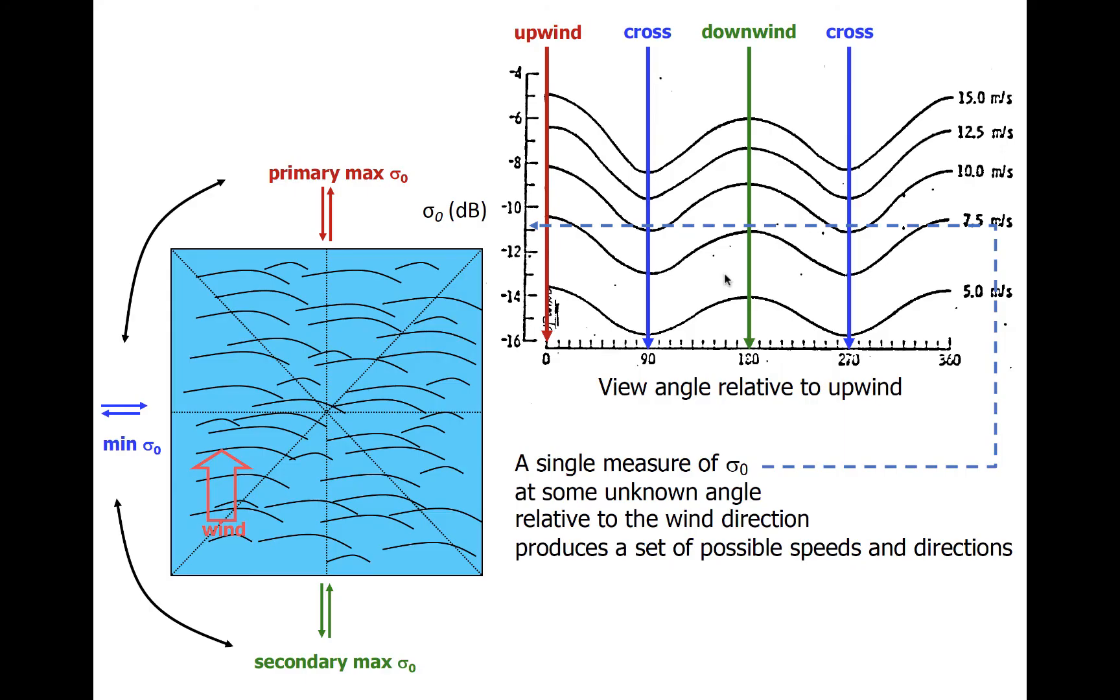Scatterometers also report wind direction. To do so requires viewing the same scene from two or more angles. Suppose we have some sort of scene like shown on the left here, with the wind blowing from the bottom to the top of this image. The wind-driven wave crests and troughs will tend to be oriented along the direction of the wind flow.